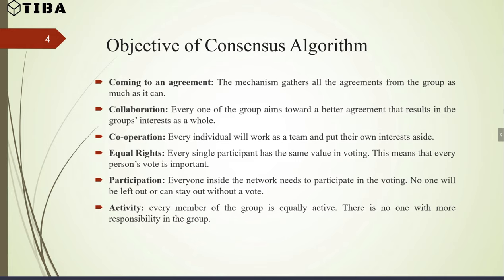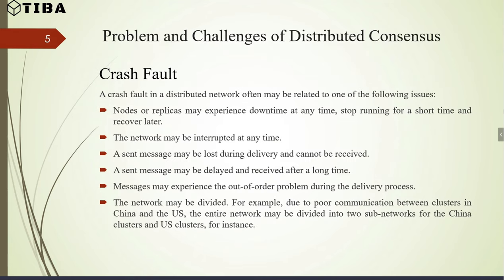The sixth objective is activity — every member of the group is equally active, with no one having more responsibility than another. The value is the same for every node, whether it has less processing power or high processing power. To fully understand distributed consensus, we need to first build an understanding of the features of a distributed network, including its main characteristics and possible problems.